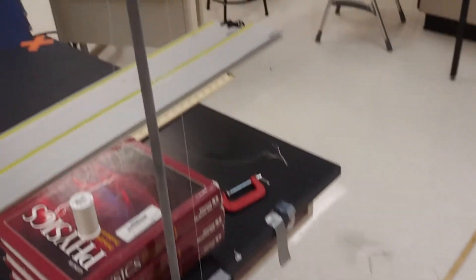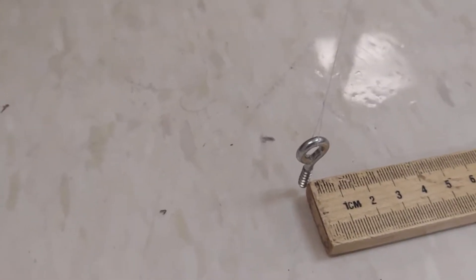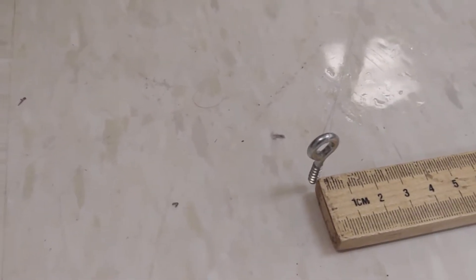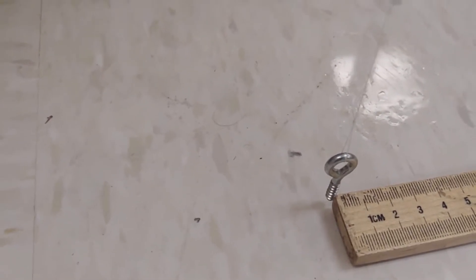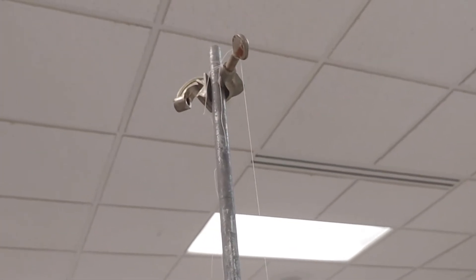All right, so to measure exactly where we landed, I've taken a second thread attached exactly like the first one, except this one is longer. And this is what we call a plumb bob. It is a string with a heavy pointy object at the bottom. So once this comes to rest, it points to the spot on the ground directly below whatever it's hung from.